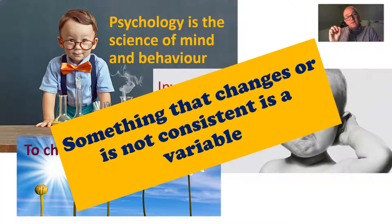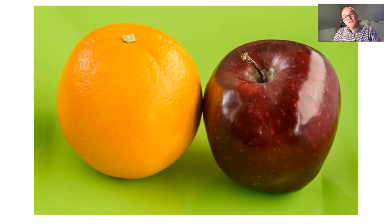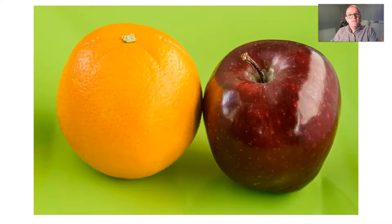In psychology, we manipulate and measure things that change to see how they influence each other. Most psychological researchers are looking at a difference - if you have two different things, that is a variable. They vary.